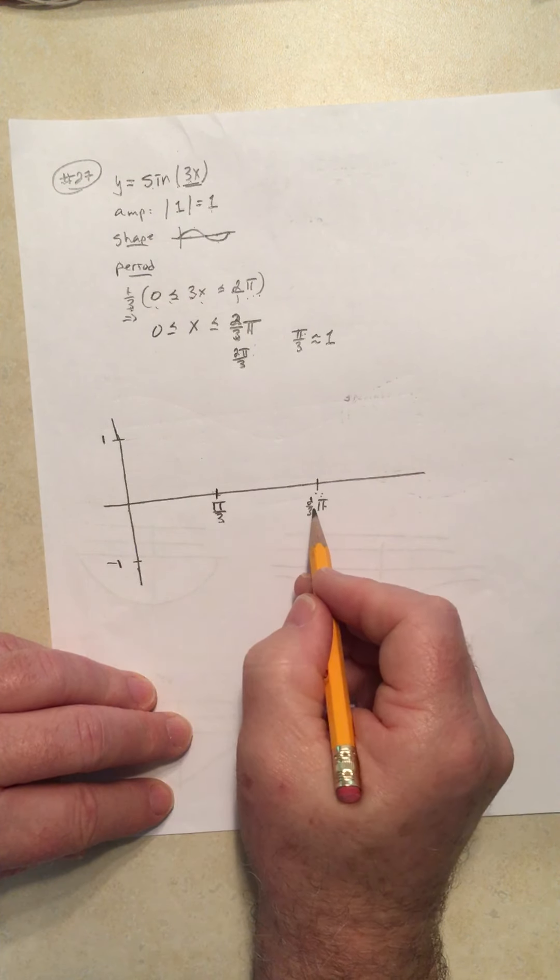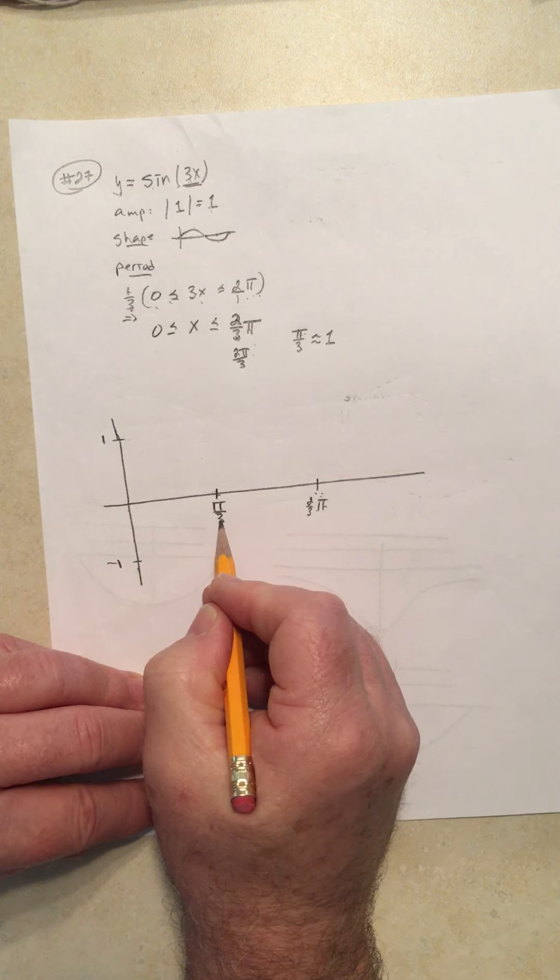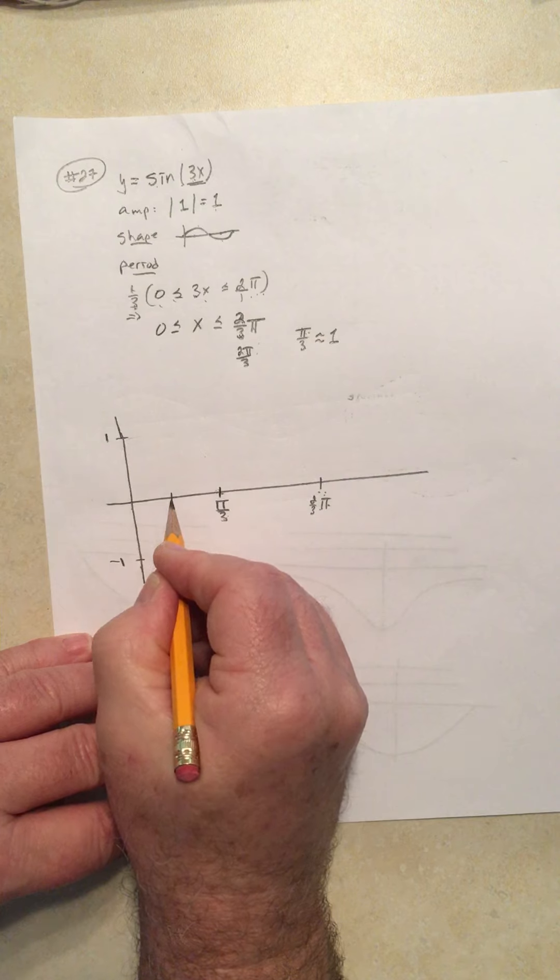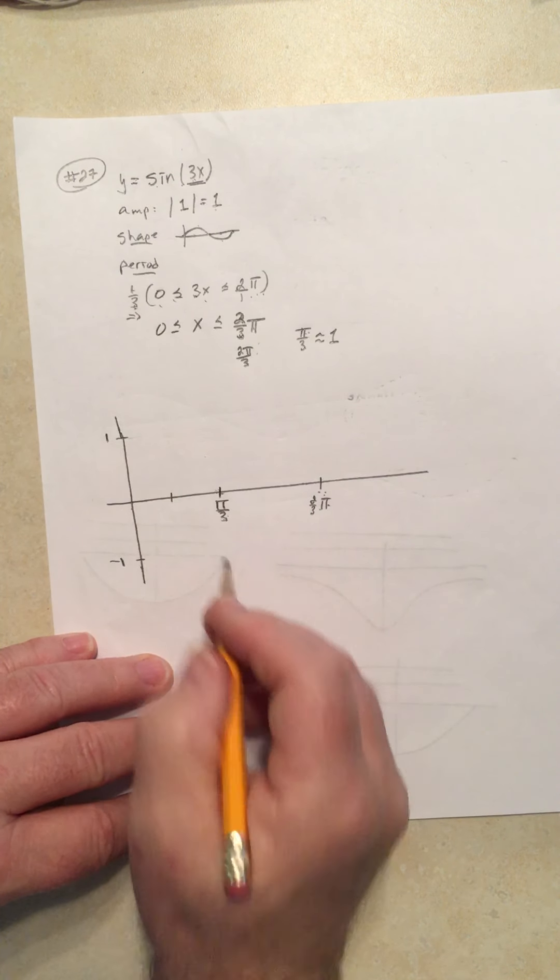Well, we already have the midpoint. If this is 2/3, this is clearly 1/3. Now, if this is 1/3, what is half of a third? Well, that's 1/6.